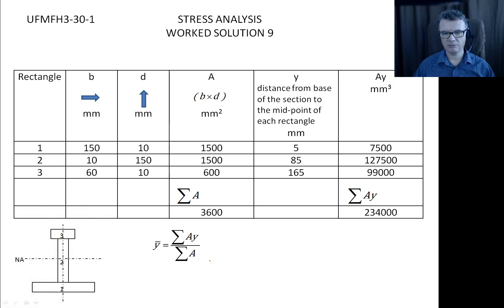And then sum up my Ay columns, sum up my A columns. One divided by the other, and that gives me the result. This table, we've decided to work in millimeters.